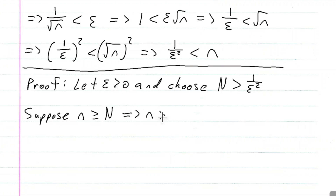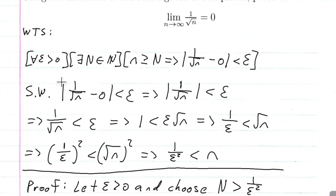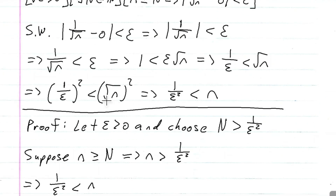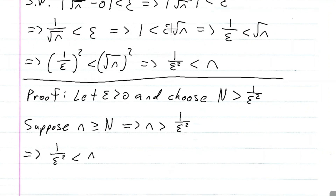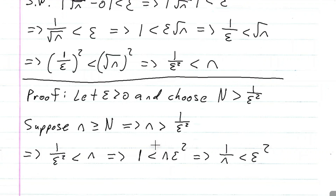This implies that little n is strictly bigger than one over epsilon squared, because if big N is greater than one over epsilon squared and little n is bigger than or equal to big N, then little n is strictly bigger than one over epsilon squared. We need to write it this way so we can work into a comfortable form. Then we just do algebra: one is less than n times epsilon squared, and then one over n is less than epsilon squared — dividing both sides by n.